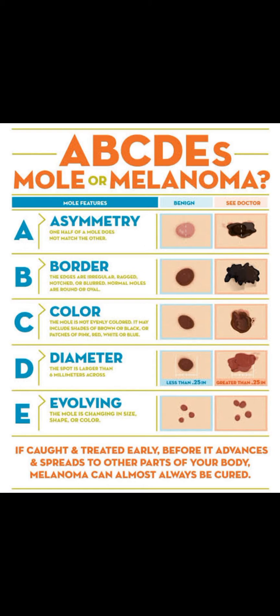There are four different types of melanoma. The first is superficial spreading, the second is nodular, the third is lentigo maligna, and the fourth is acral lentiginous, which has a high prevalence in people with darker skin tone.